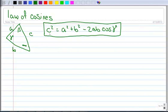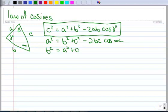So it says that c² = a² + b² - 2ab cos γ. Likewise, we can also say a² = b² + c² - 2bc cos α. And b² = a² + c² - 2ac cos β.